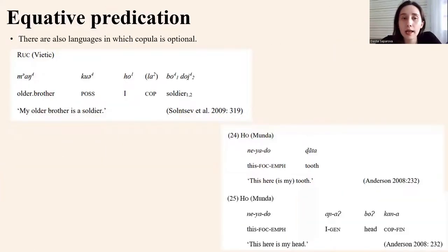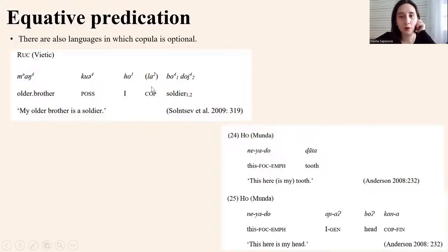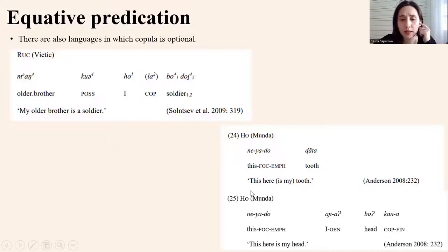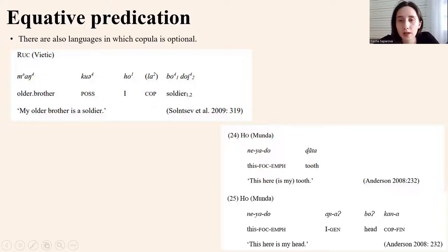There are also languages in which the copula is optional. For example, in the language Ruk, the copula — which is actually a borrowing from Vietnamese — can be used or can not be used. And in examples 24 and 25 from Munda, the copula is also optional; we can say a sentence without it.